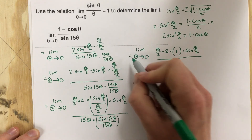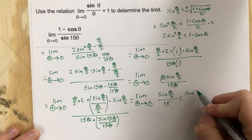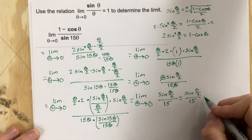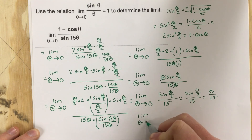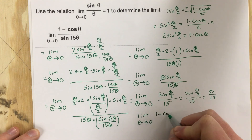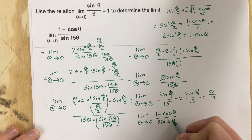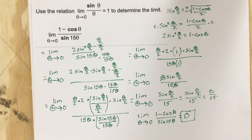Now we can actually evaluate the limit by plugging in 0. We get sine of 0 over 2, all over 15. Since sine of 0 equals 0, the limit as theta approaches 0 of 1 minus cosine theta over sine 15 theta equals 0. So after all that algebra manipulation, our final answer is 0.